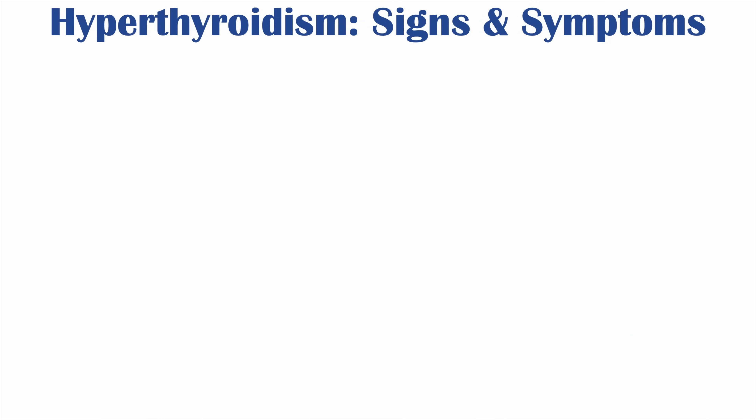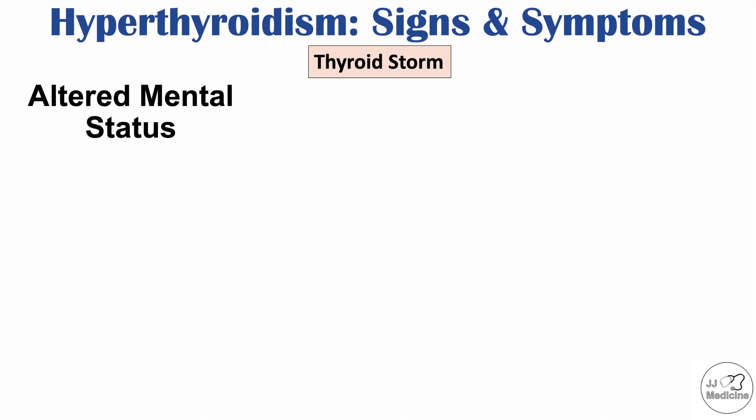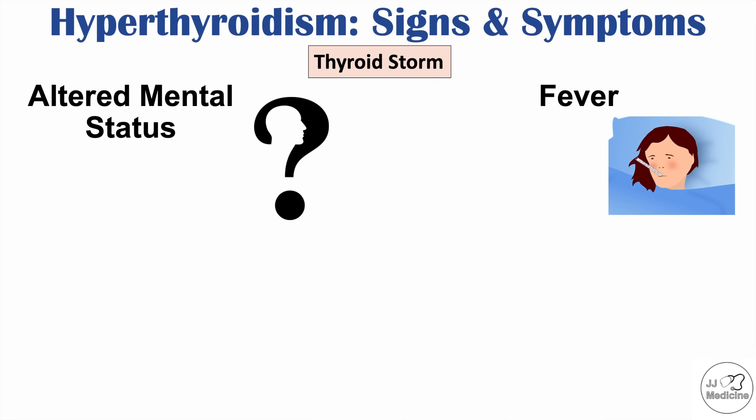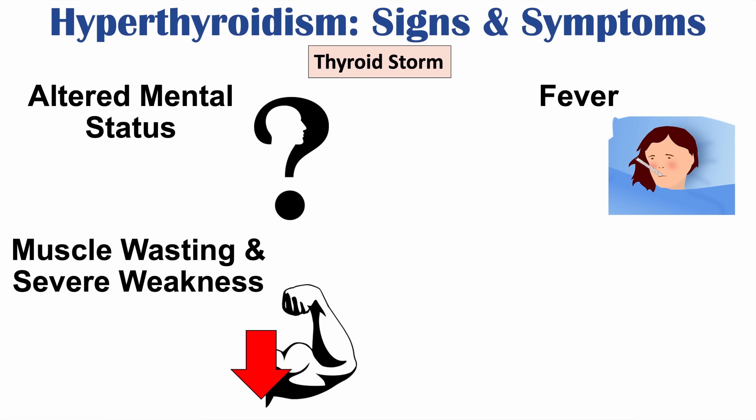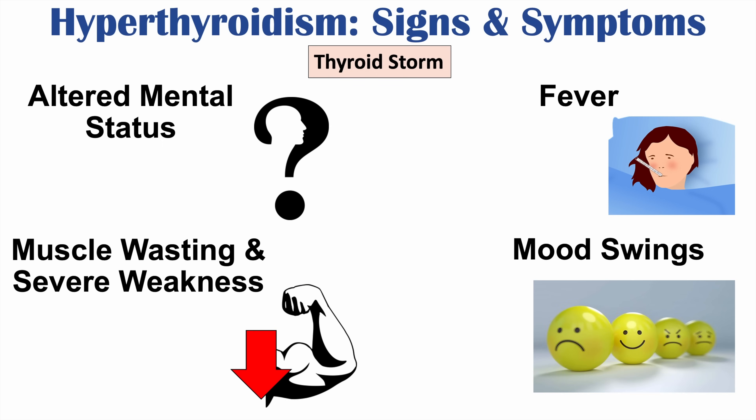If thyroid hormone levels become extremely high, this can lead to thyroid storm — a medical emergency in patients with hyperthyroidism, especially if untreated. In thyroid storm, specific findings to recognize include altered mental status such as confusion, fever, muscle wasting and severe weakness, and mood swings.